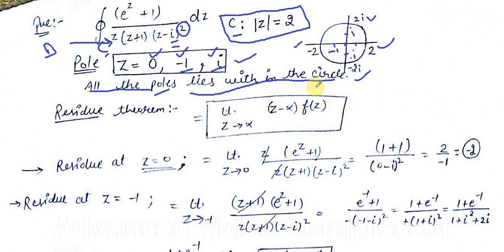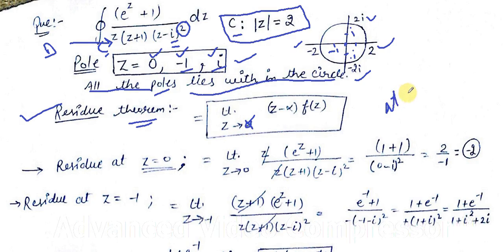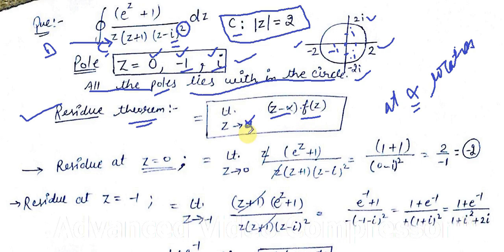According to the Residue Theorem, we need to calculate the residue at each pole. For a simple pole at z = α, the residue is found by taking the limit as z → α of (z − α)·f(z) — multiply by the factor and substitute the value of z = α to get the residue at that specific pole.